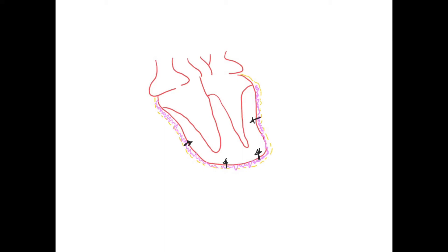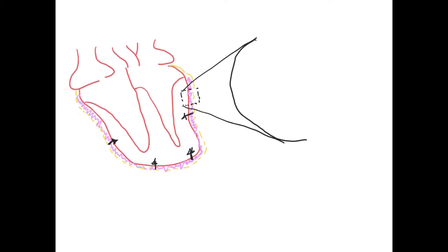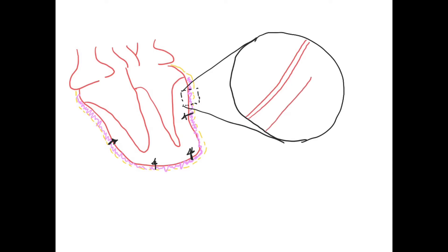If we take a look at what's actually happening deeper into the heart tissue, we can have a better idea of why we see global ST elevation in pericarditis. Remember, the inner layer of our heart tissue is the endocardium, the middle layer is our myocardium, and the outer layer — which we're going to be concerned about today — is the epicardium.